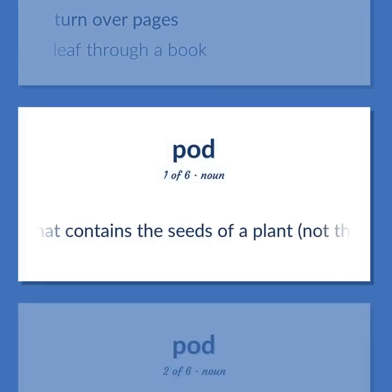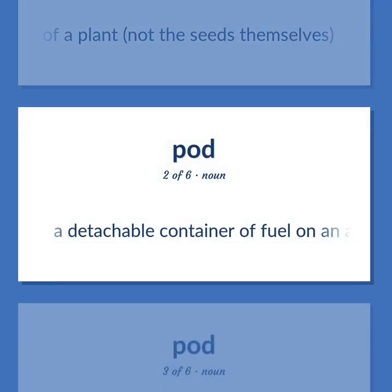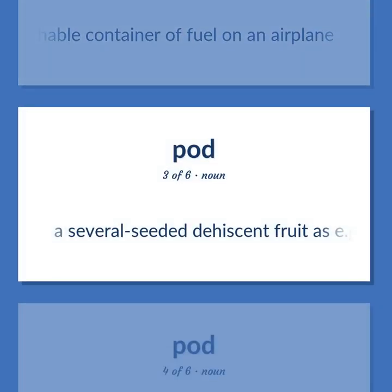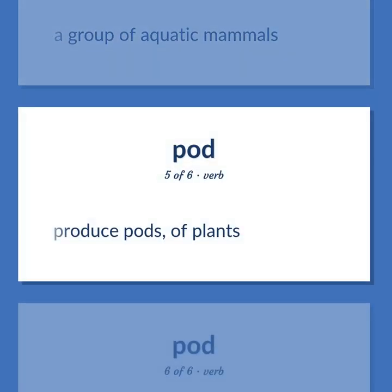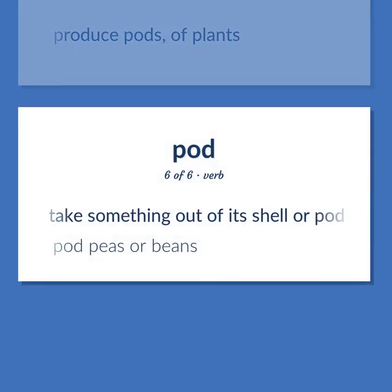Pod: The vessel that contains the seeds of a plant, not the seeds themselves. A detachable container of fuel on an airplane. A several-seeded dehiscent fruit, e.g. of a leguminous plant. A group of aquatic mammals. Produce pods, of plants. Take something out of its shell or pod — pod peas or beans.